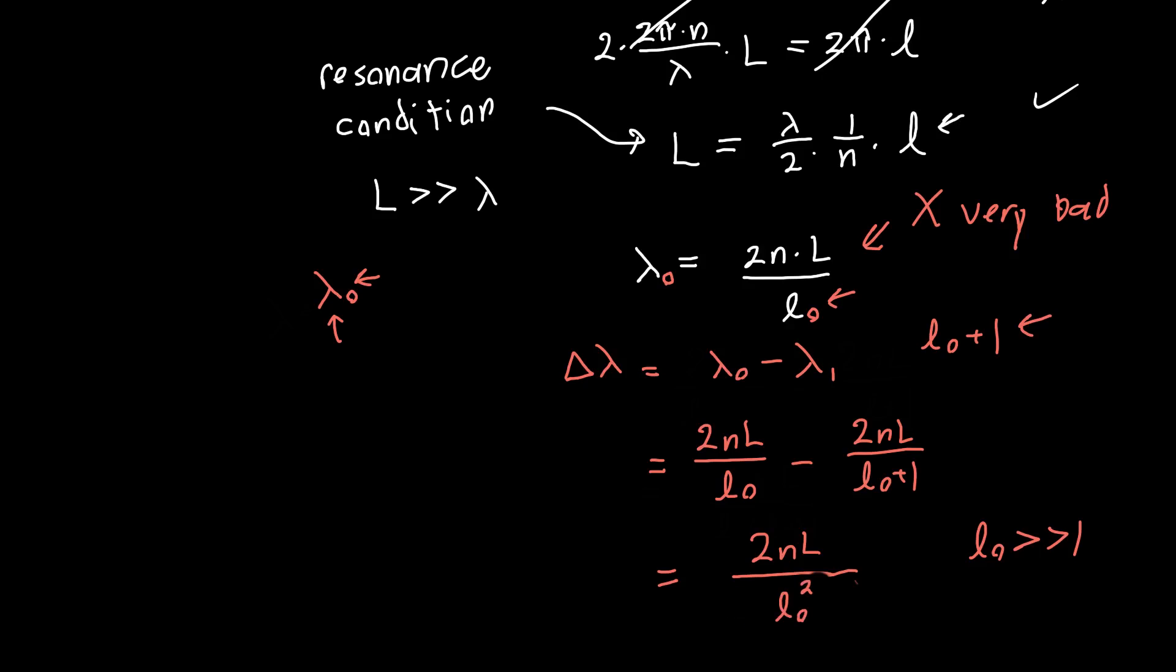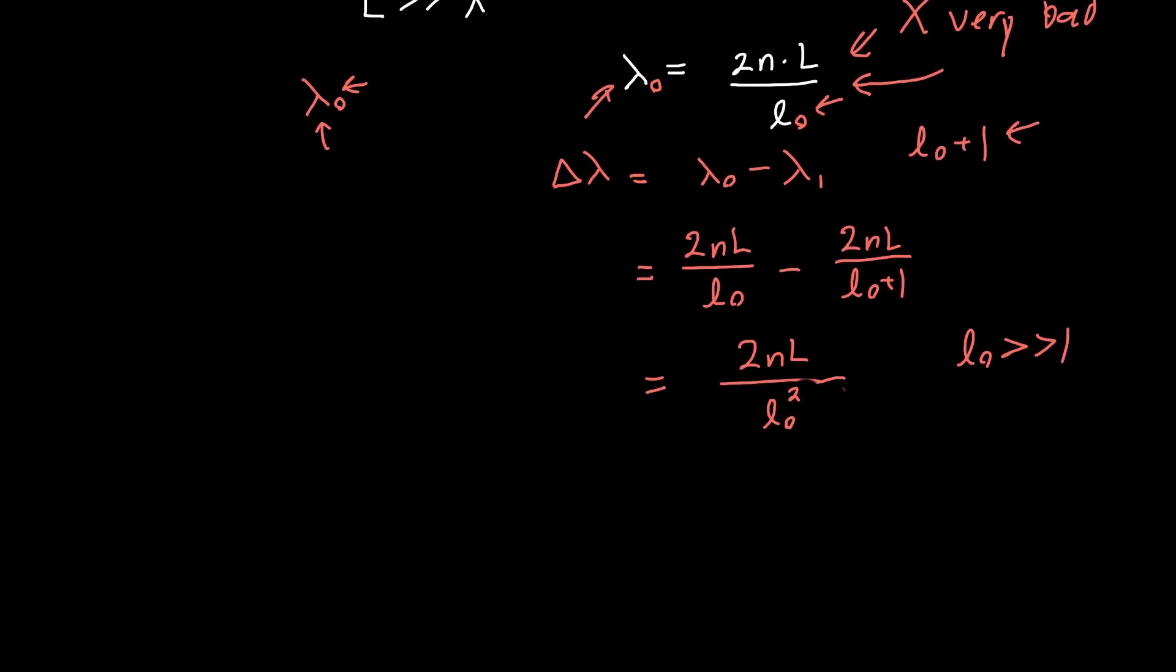But we know what l naught is. It's just defined up here in terms of our design wavelength, which is the important thing that we're worried about as engineers. We don't really care about what this integer is. And so if you substitute that in terms of the wavelength, you'll get that the wavelength spacing is just equal to your design wavelength squared divided by 2 times n times the length of your cavity. And this is known as the mode spacing.